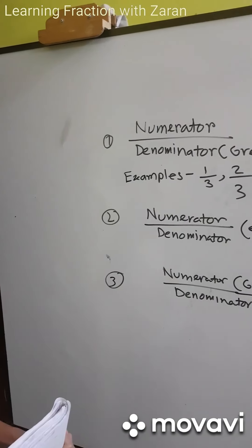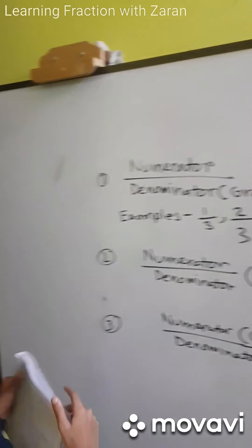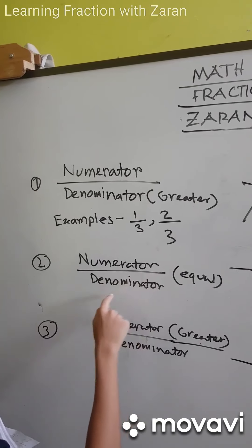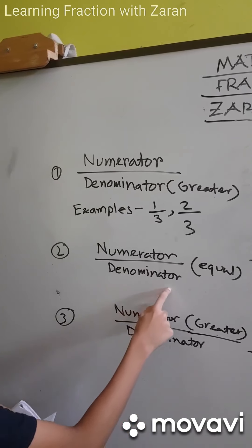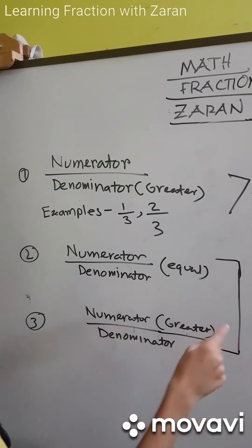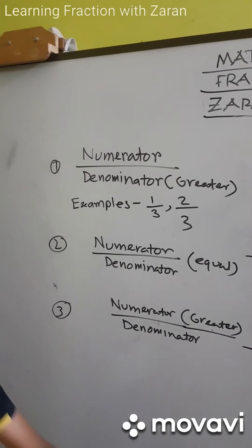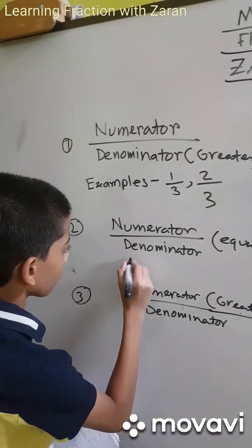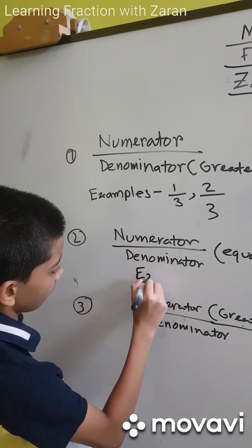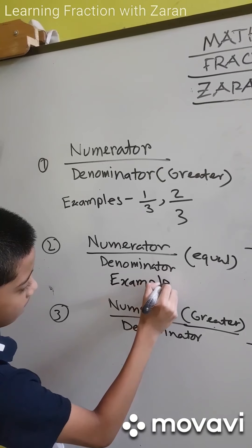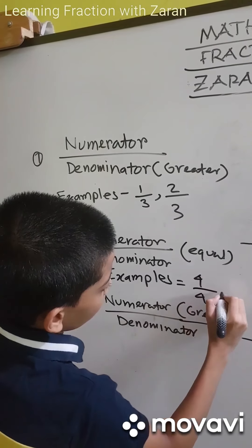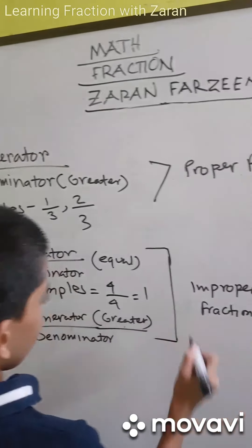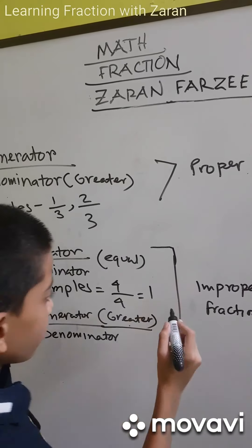Now the second type: if the numerator and denominator are equal, it will be an improper fraction. For example, 4 by 4 equals 1, and 2 by 2 equals 1.